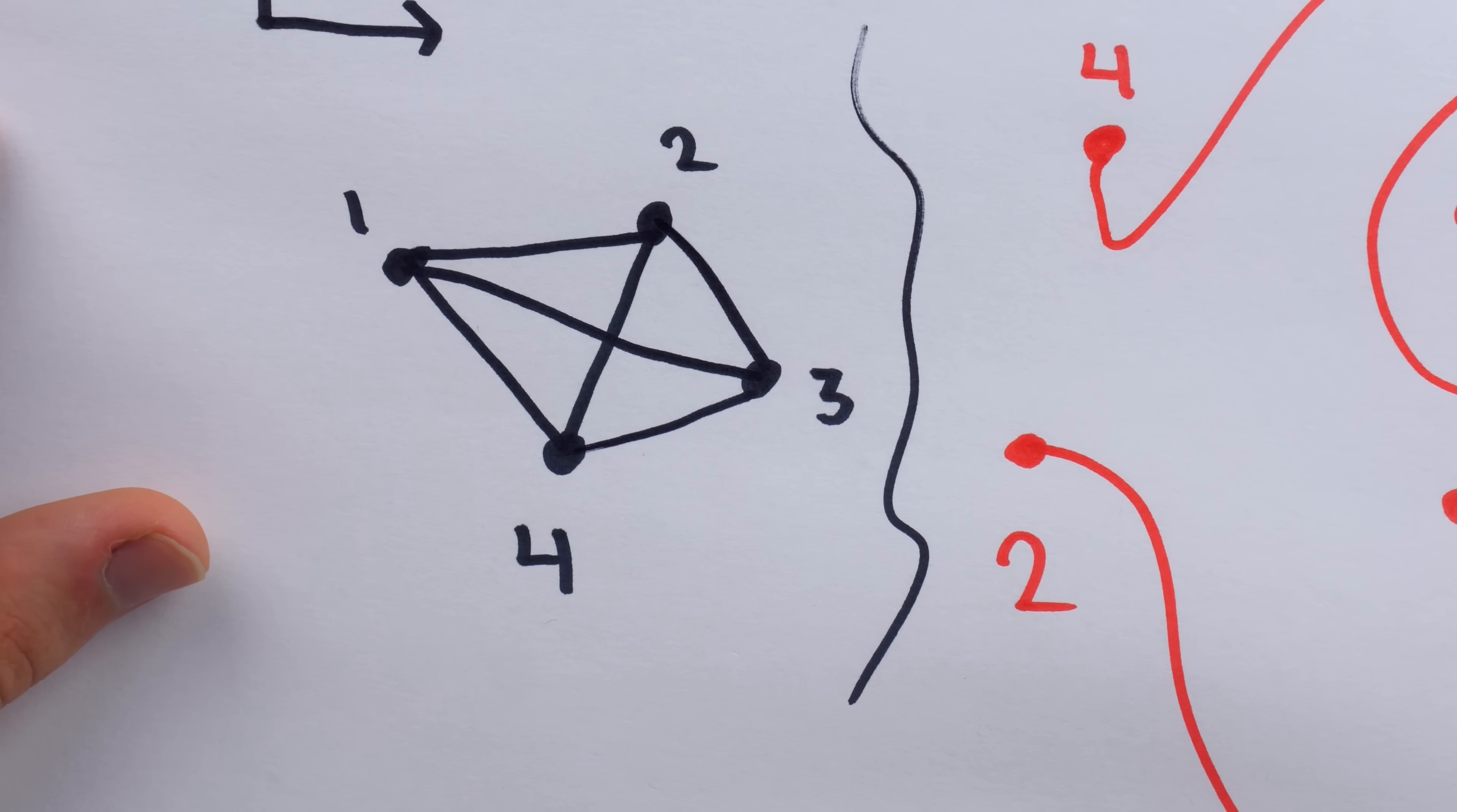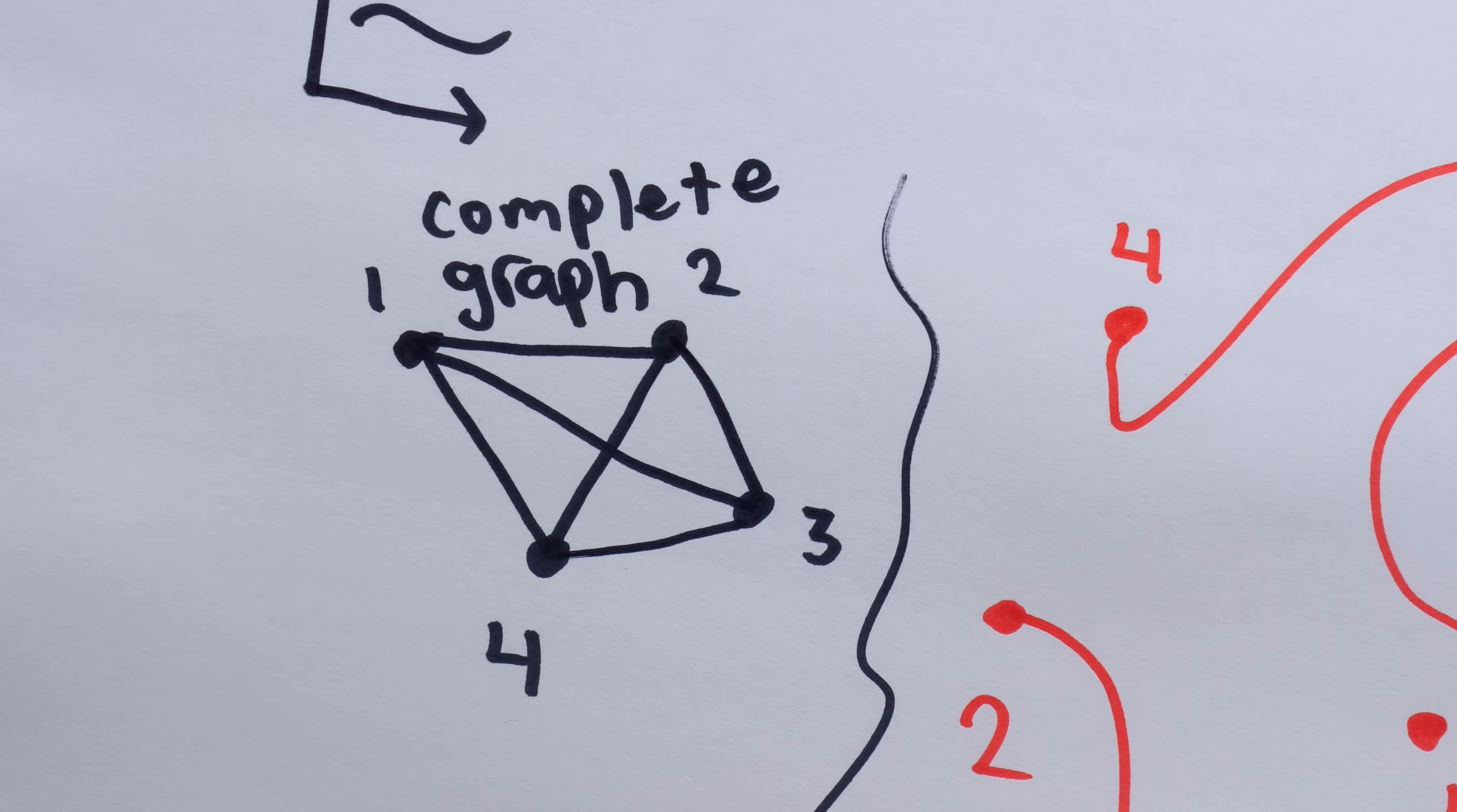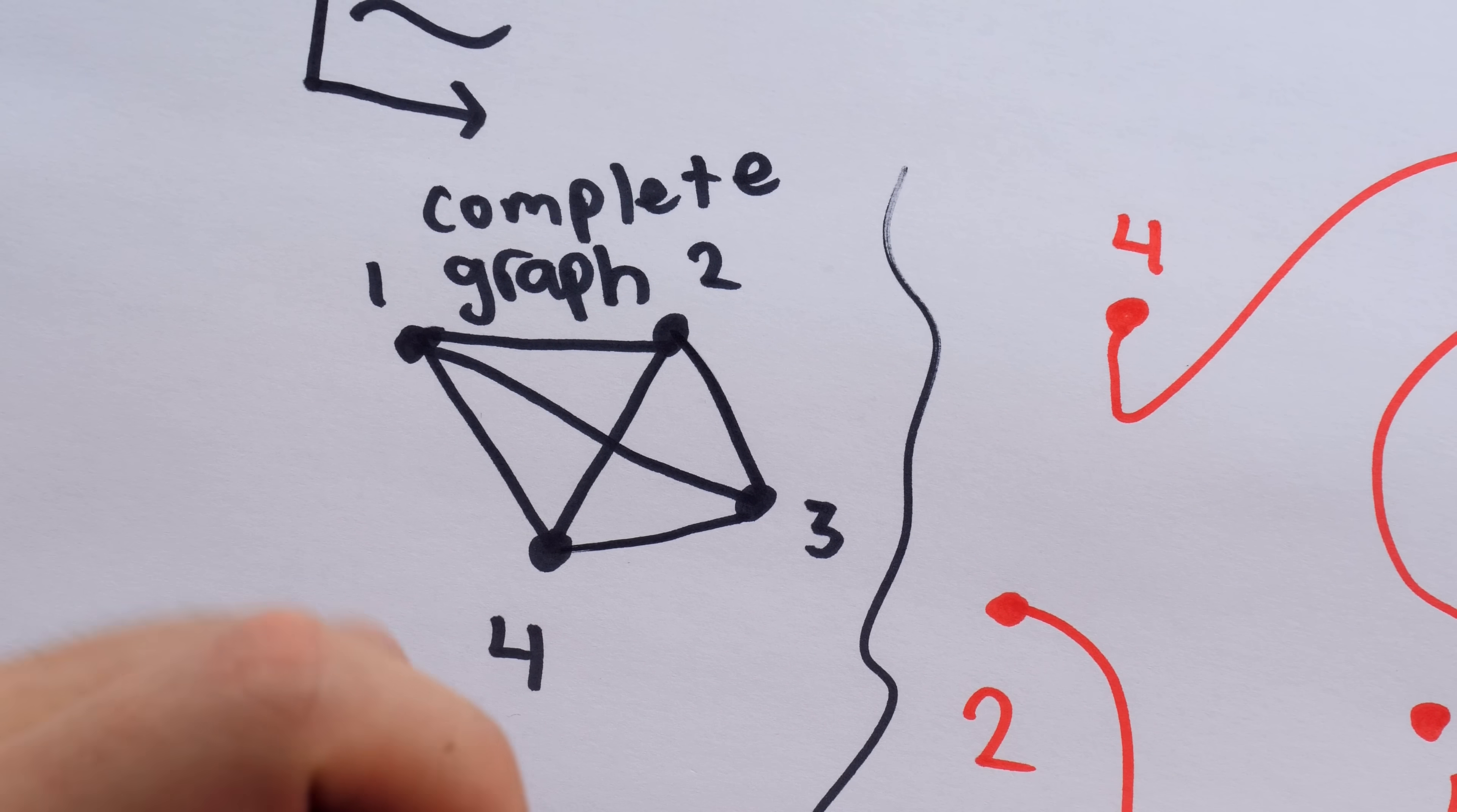And now, hey look, this graph suddenly has every edge it possibly could. A graph that has every edge possible on its set of vertices is called a complete graph. That, of course, is because it has a complete set of edges. It has every edge that it possibly could.